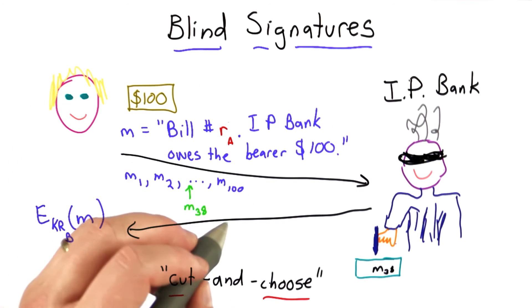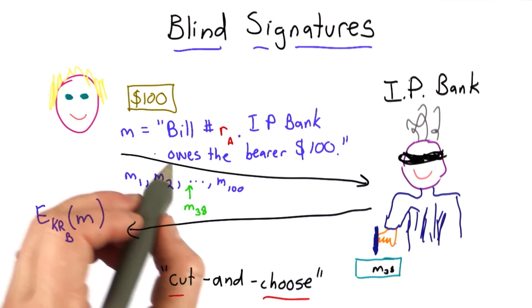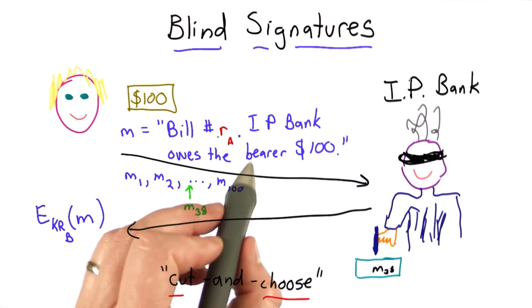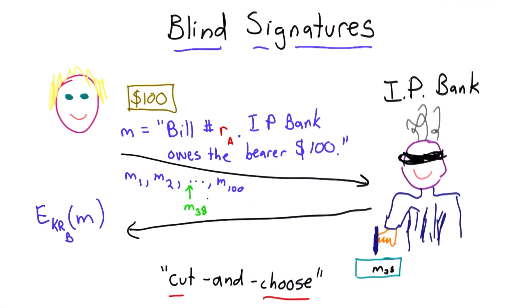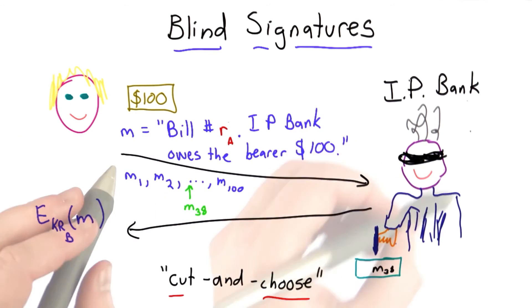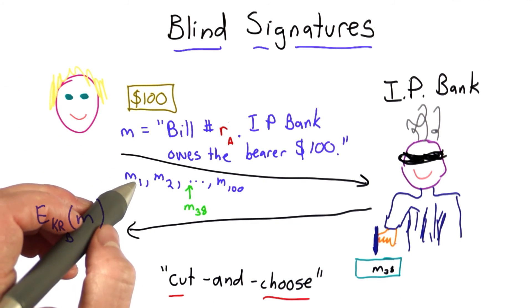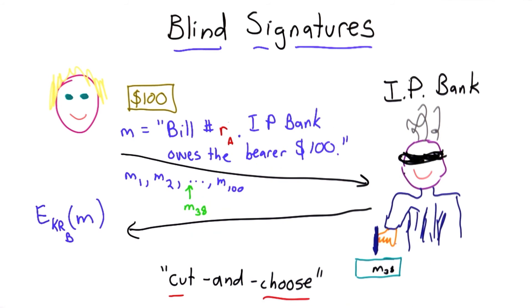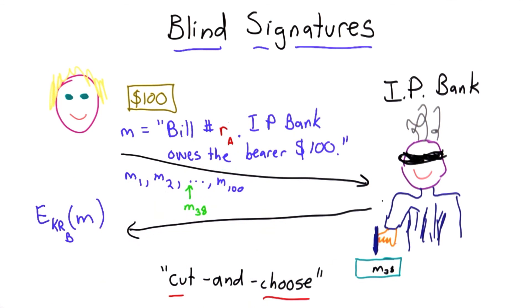Since the bank is picking the one to sign randomly and inspecting all the others, the probability of Alice being able to cheat without getting caught is one in the number of messages. That could work with blindfolds — we'd have to be careful how we deliver the messages to the bank and then let the banker pick one and see them without the blindfold — but that could work. Not very convenient though.